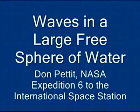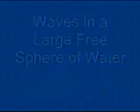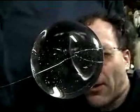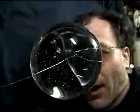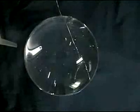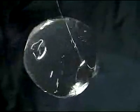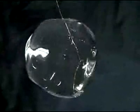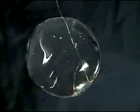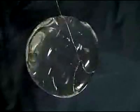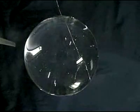Waves in a large free sphere of water. Here we have a large free sphere of water about the size of my head, 130 millimeters in diameter. We put a puff of air — 10 CC in 100 milliseconds — radially directed in from the side, and look at the resulting waves. There's a combination of surface waves and body waves that go through this sphere.